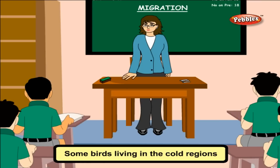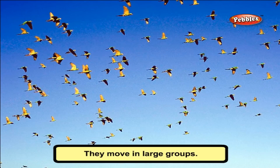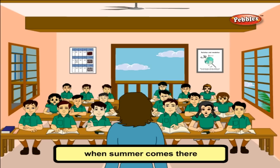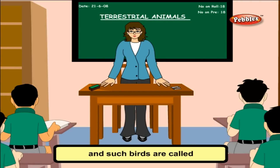Aerial animals have special features: lightweight hollow bones, wings, tail, and feathers. Some birds living in cold regions fly very far away to warmer regions in winter when food becomes scarce. They move in large groups and return to their places when summer comes. They do this every year for their survival. This is called migration, and such birds are called migratory birds.